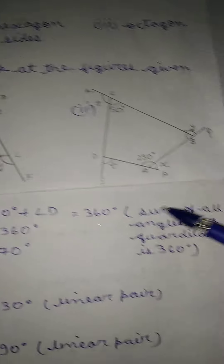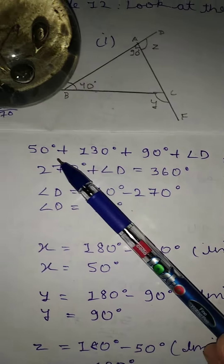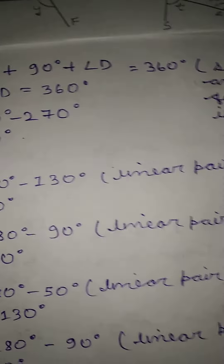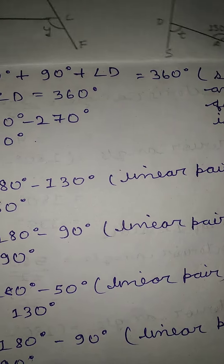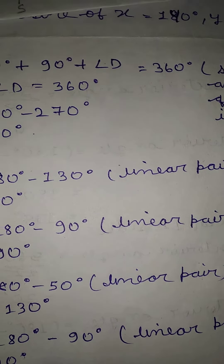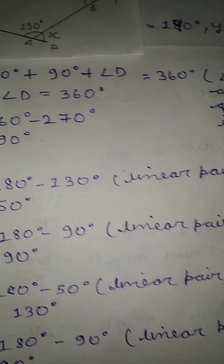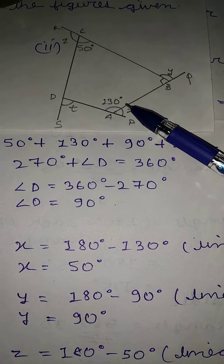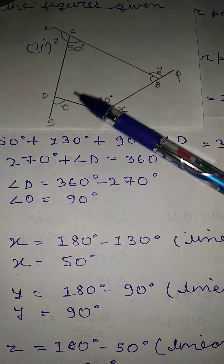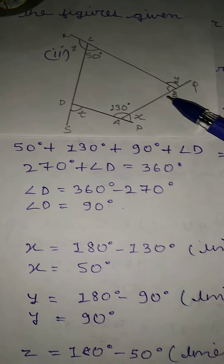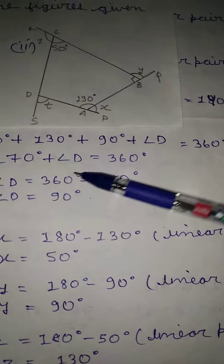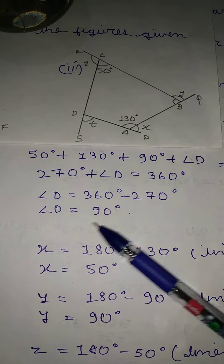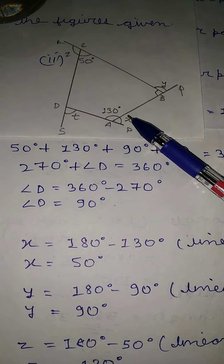First, 50 degrees plus 130 degrees plus 90 degrees plus angle D is equal to 360 degrees. We can write this as an equation, so we obtain angle D is equal to 90 degrees.